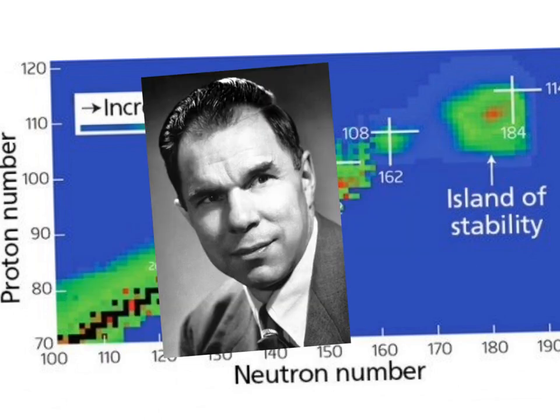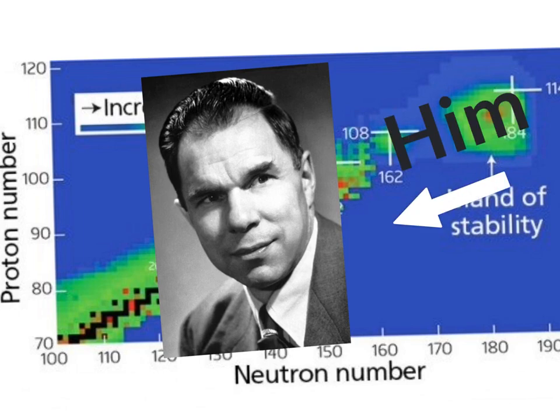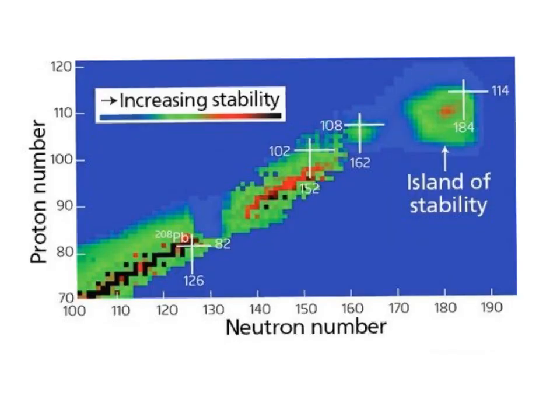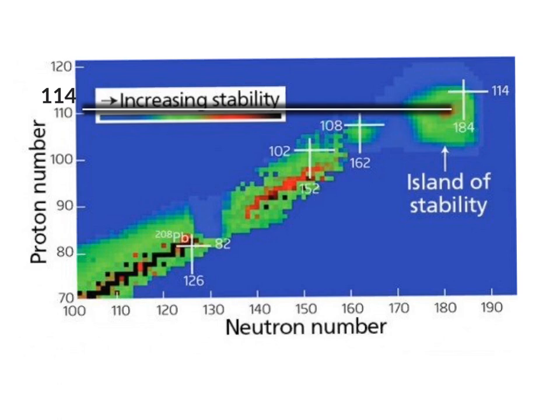This idea was first proposed in the 1940s by Glenn T. Seaborg. Around that time, scientists proposed that the island of stability would center around element 114, the element with 114 protons. At that point, they'd discovered only around element 100.